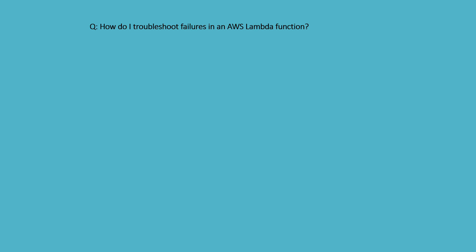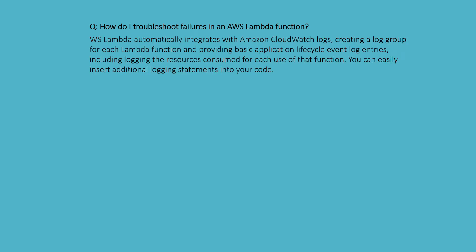How do I troubleshoot failures in AWS Lambda functions? AWS Lambda automatically integrates with AWS CloudWatch Logs, creating a log group for each Lambda function and providing basic application lifecycle event log entries, including logging and resource consumption for each invocation. You can easily insert additional logging instrumentation into your code.